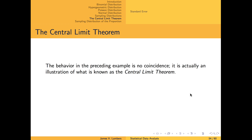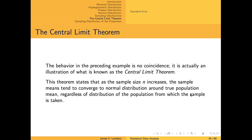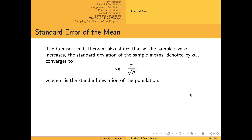This behavior actually occurs with any sampling distribution of the mean. According to the central limit theorem, as the sample size n increases, the sampling distribution of the mean converges to a normal distribution, even if the probability distribution of the population from which the samples are taken is not normal. Furthermore, the mean of this normal distribution converges to the true population mean. The central limit theorem also states that as n increases, the standard deviation of the sampling distribution of the mean is approximately the standard deviation of the population, sigma, divided by the square root of the sample size n.